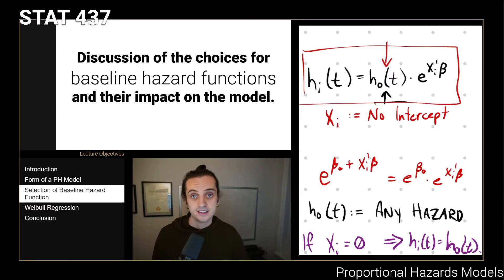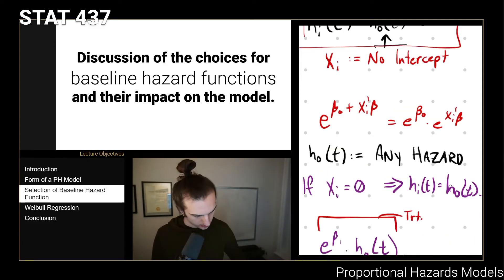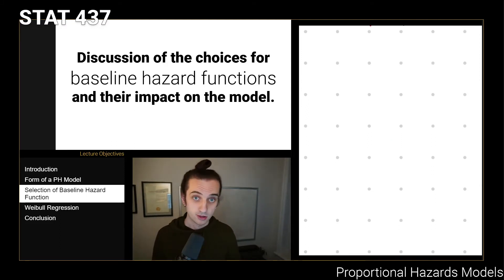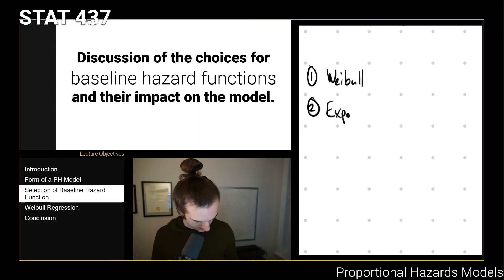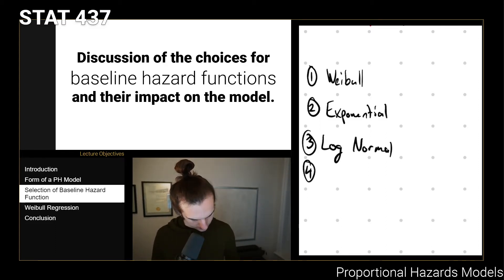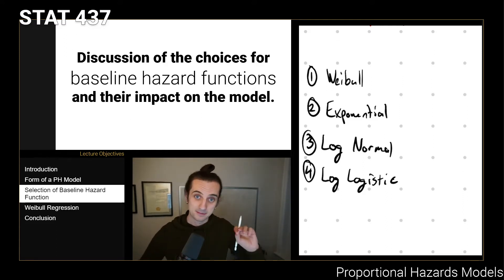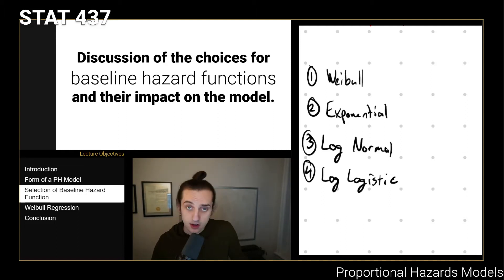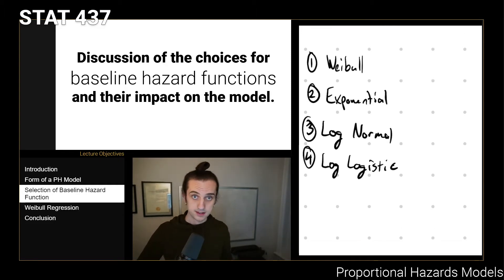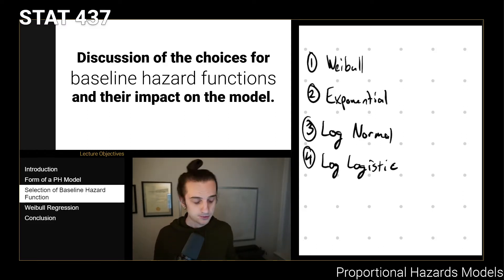The choices for the baseline hazard are up to us. We've discussed a few different distributions that are common: we can use a Weibull, an exponential, the log-normal, or the log-logistic. Choosing any one of these gives us a specific form for the hazard; each has its own hazard function that you can look up and plug in. But the big problem is that it's oftentimes difficult to find a parametric model that fits convincingly. Very frequently one of these four will be sufficient, but sometimes our data is behaving a little more erratically than is nicely captured by one of these smooth functions.